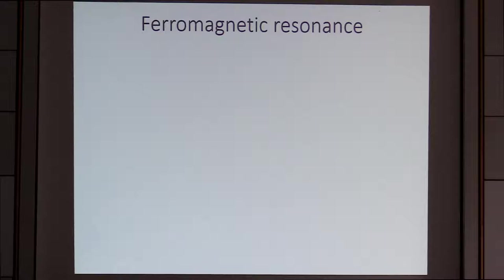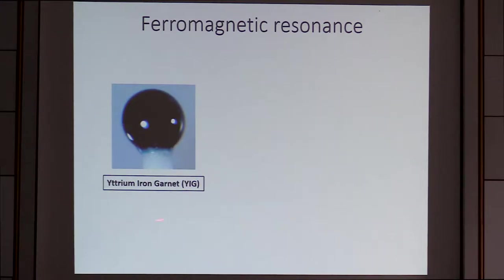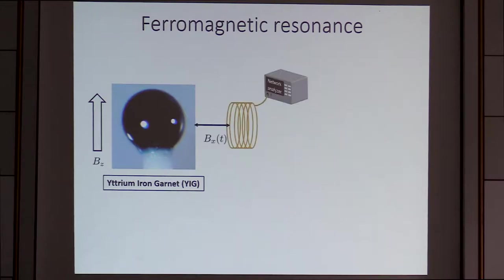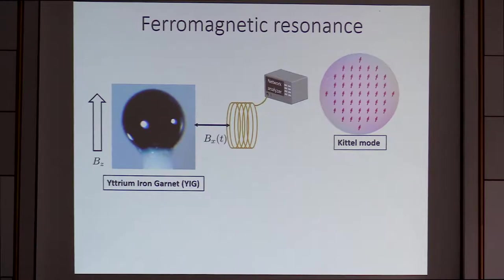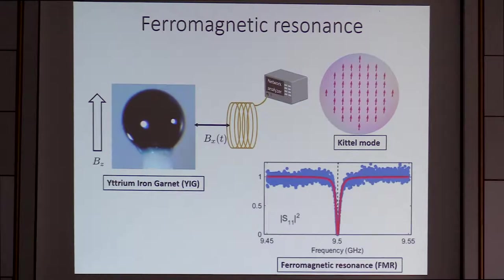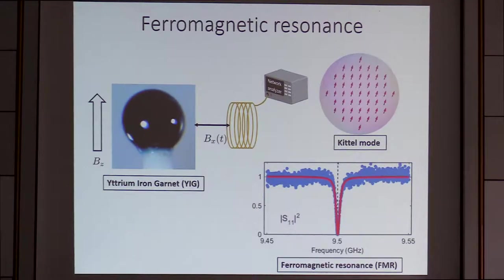How to excite magnetostatic modes? That is ferromagnetic resonance, FMR. To be concrete, we have yttrium iron garnet, YIG — a typical magnetic material, an insulator. Applying a magnetic field along the Z direction and using a coil, we excite the magnetostatic mode. This AC magnetic field perpendicular to the bias field excites the Kittel mode. If you look at the microwave reflection, what we get is a ferromagnetic resonance peak at a particular frequency corresponding to the Kittel mode resonant frequency.